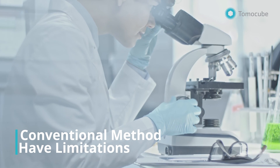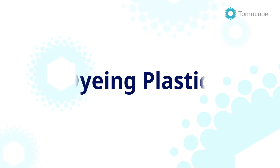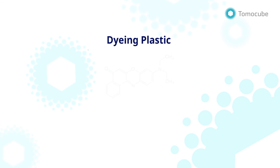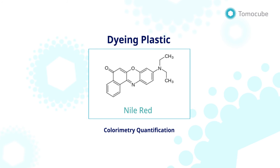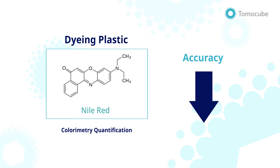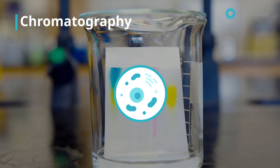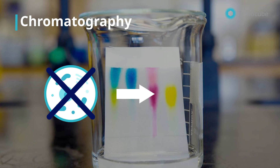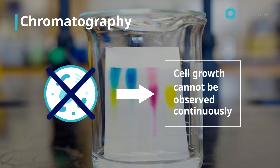However, conventional methods have limitations. Dyeing plastic with Nile red, known as colorimetric quantification, can be used to quantify, but since bacteria are no longer alive, accuracy decreases. Chromatography can also be used to quantify, but it is only measurable when cells are destroyed. Hence, growth cannot be observed continuously.